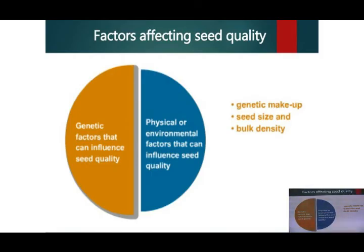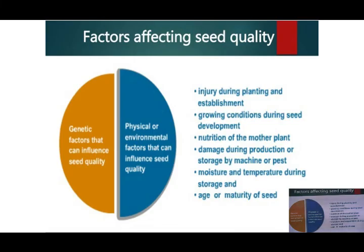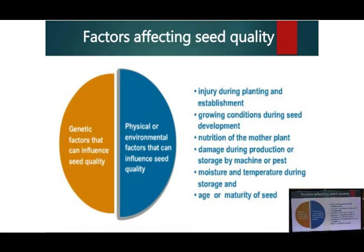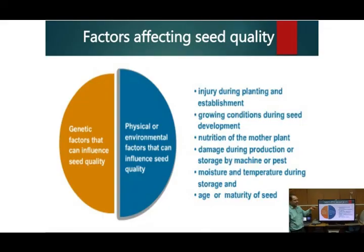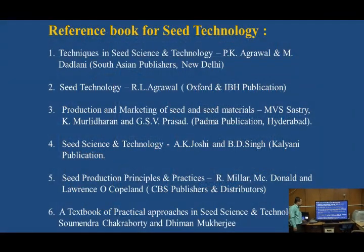Factors affecting seed quality: there are some factors which are responsible for deteriorating the quality of seeds. This may be the genetic makeup, which consists of seed size and bulk density. Physical or environmental factors that can influence seed quality include injury during planting and establishment, growing conditions during seed development, nutrition of the mother plant, and damage during harvesting. These physical factors are responsible right from the seed plot sowing to harvest and storage — physical purity should be maintained throughout, otherwise these factors affect the seed quality.